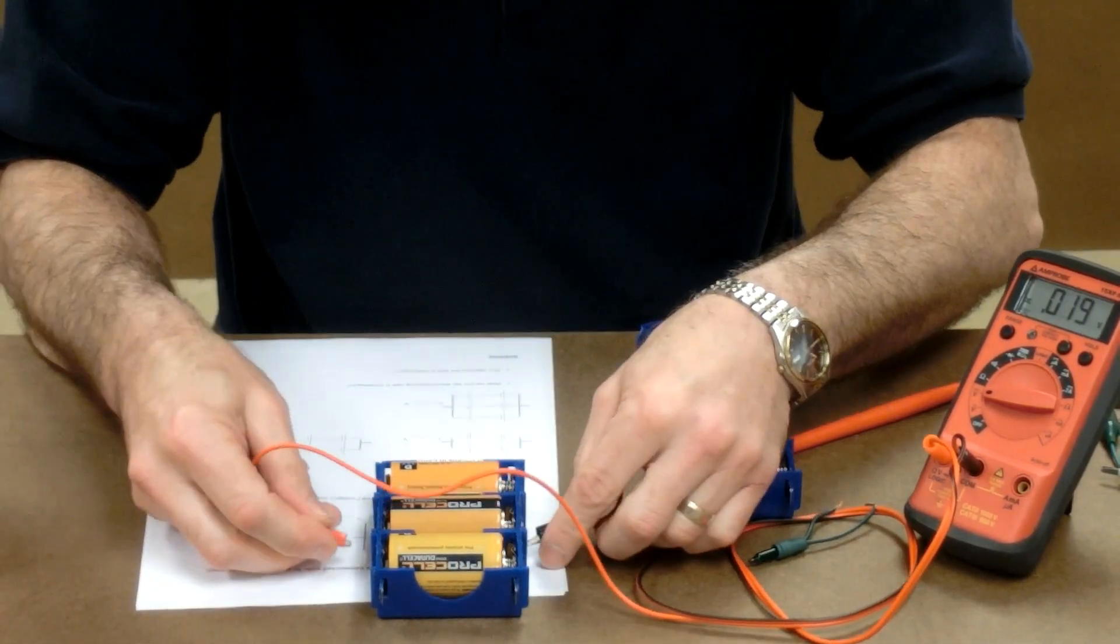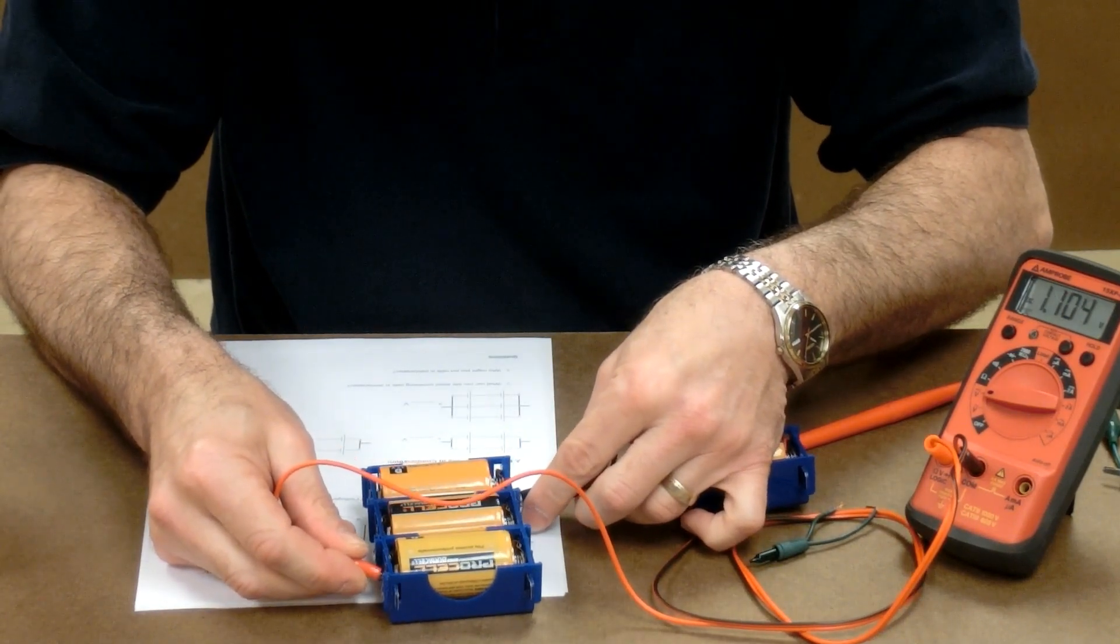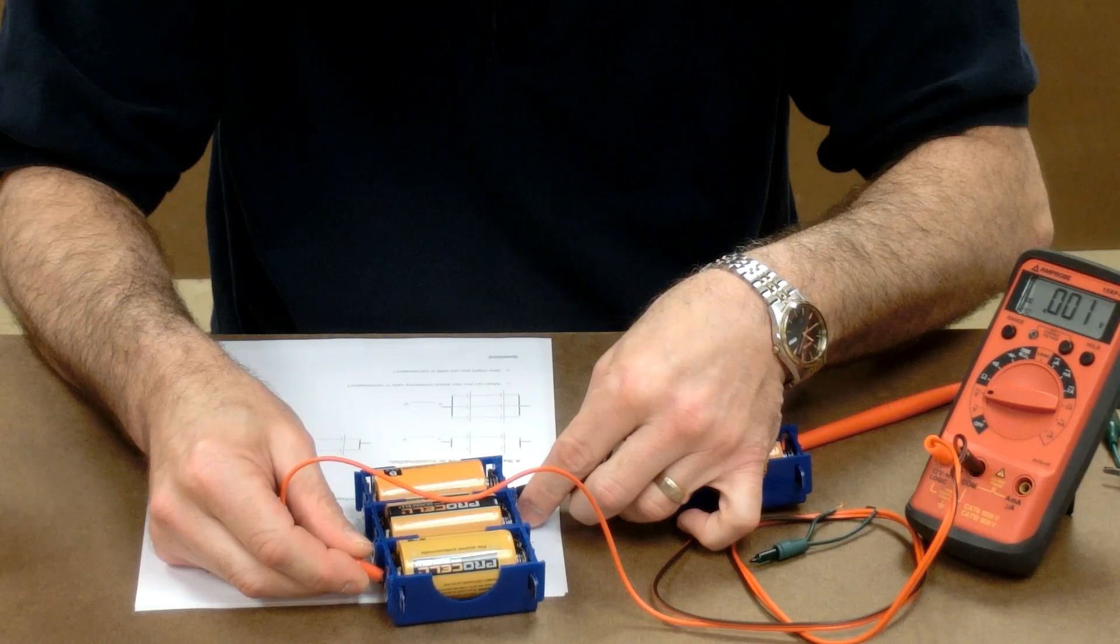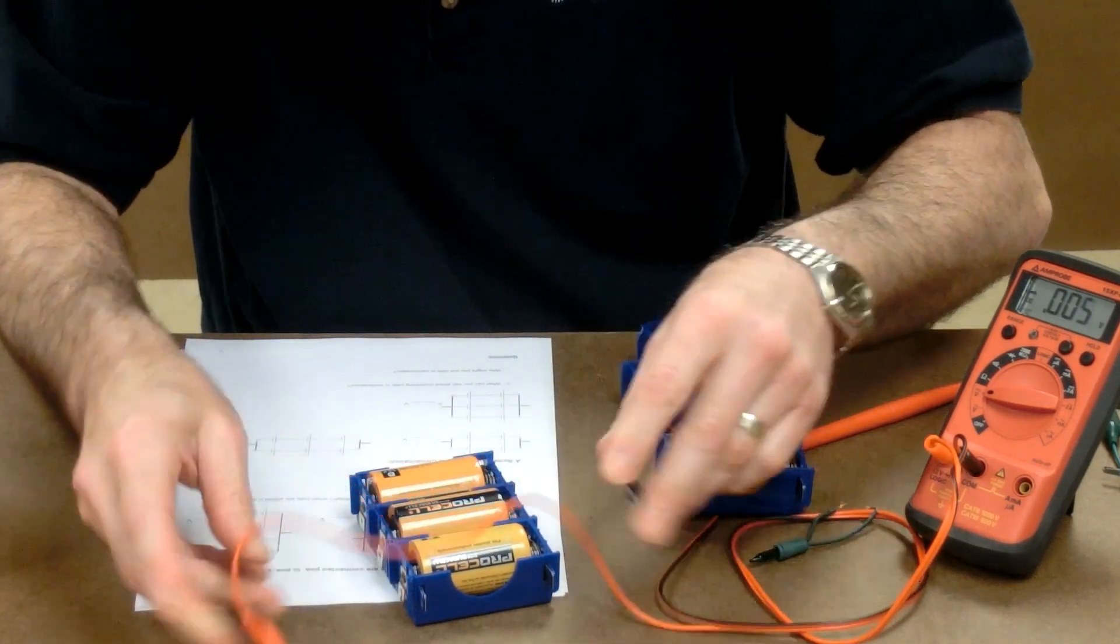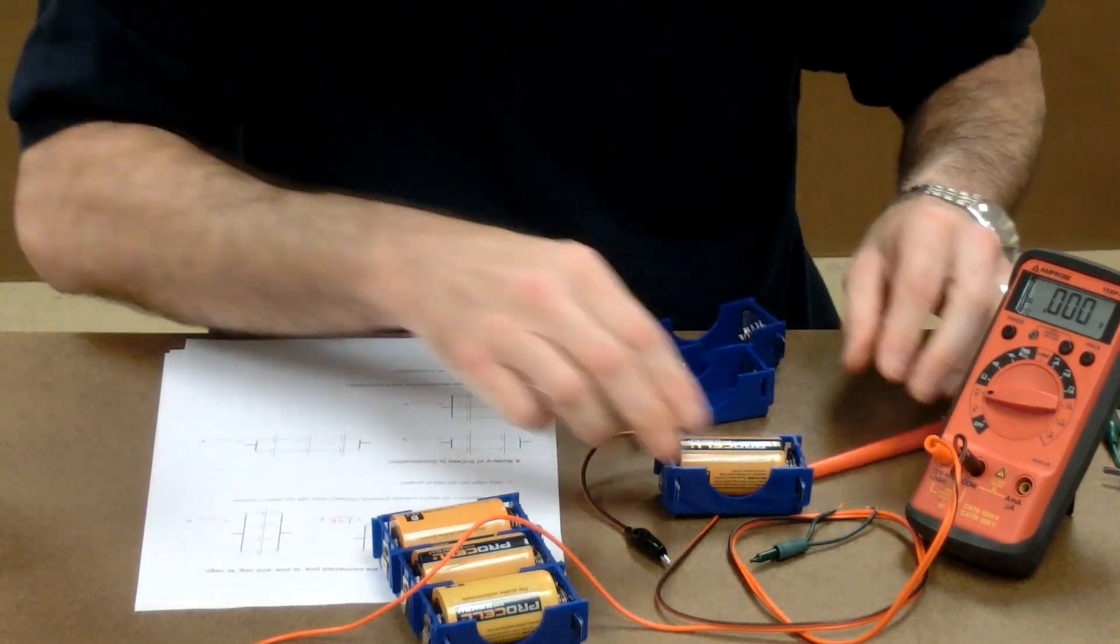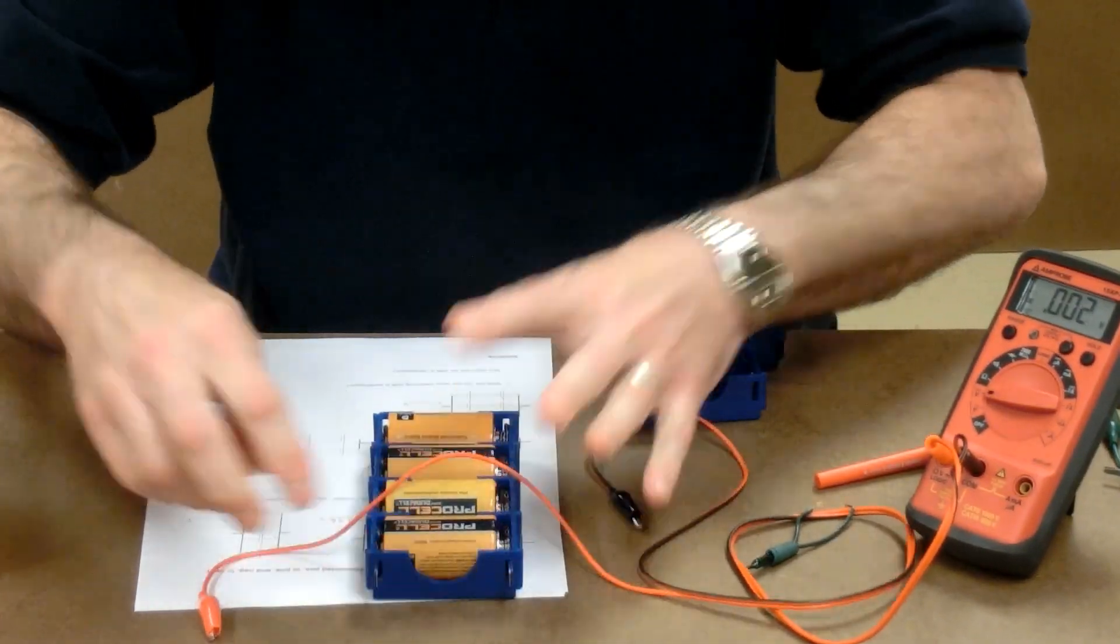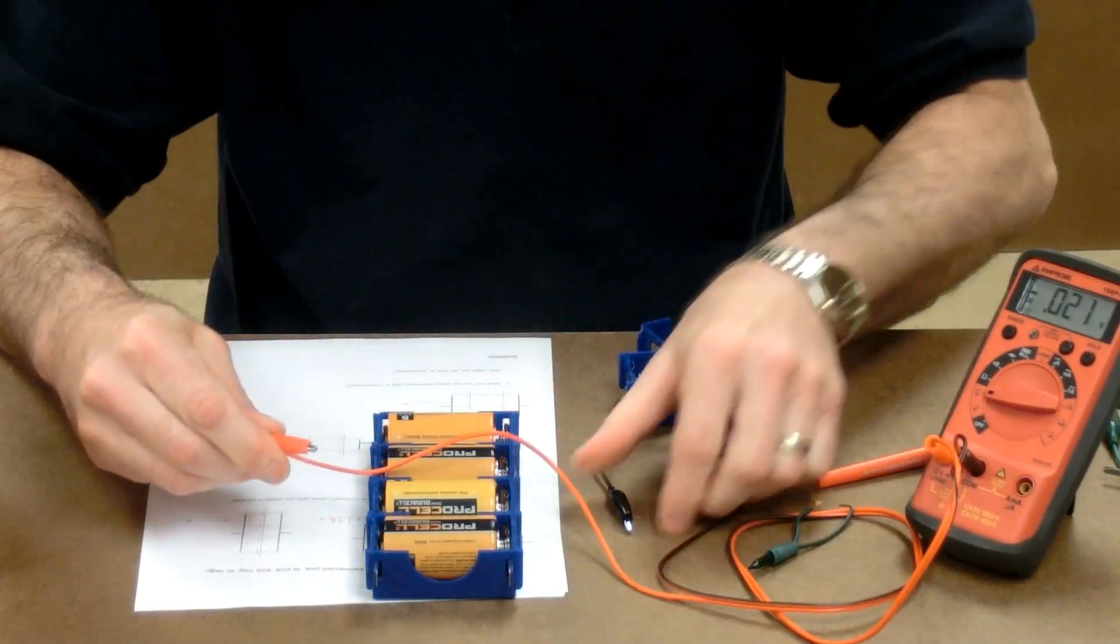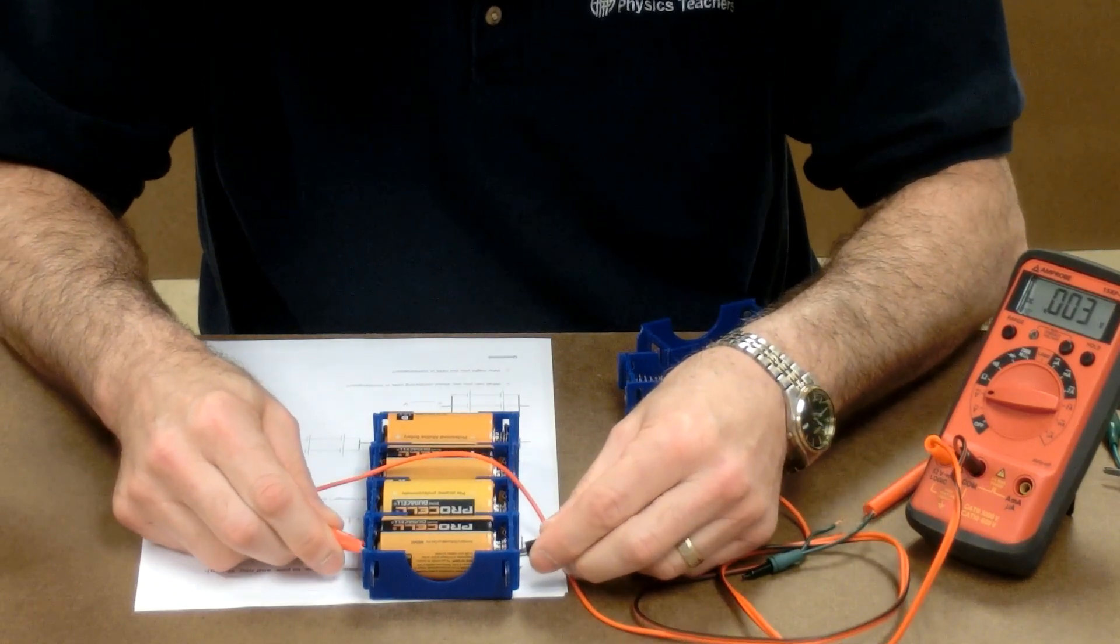We'll put three of them, still 1.56 volts. And if we put a fourth one in parallel, we still get 1.56 volts.